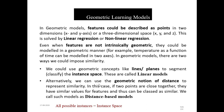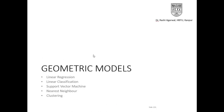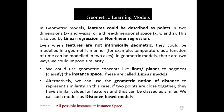Similarly, when the features are not intrinsically geometric but they can be modeled in a geometrical manner — for example, I have a time series data of temperature of a particular city as per the day — then I could model it as a function of time on two axes. One axis could have the temperature and the other axis could have the time. In geometric models, there are two ways that we can impose similarity. We could do both regression and classification. For regression, we use either linear regression or nonlinear regression. For classification, I could use linear classification, SVM, nearest neighbor, or clustering.